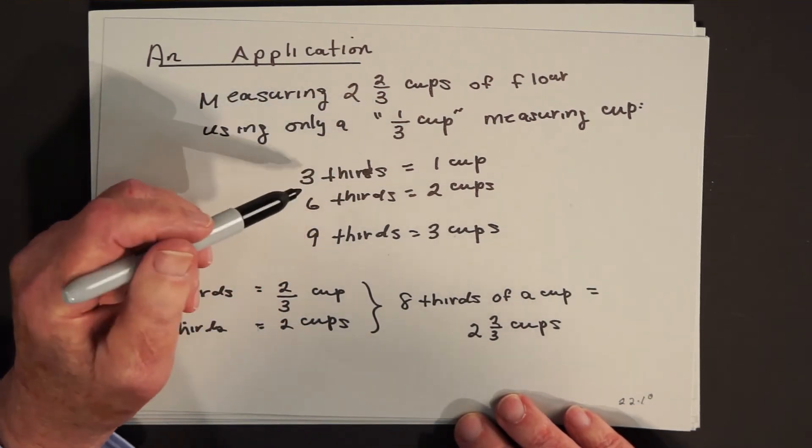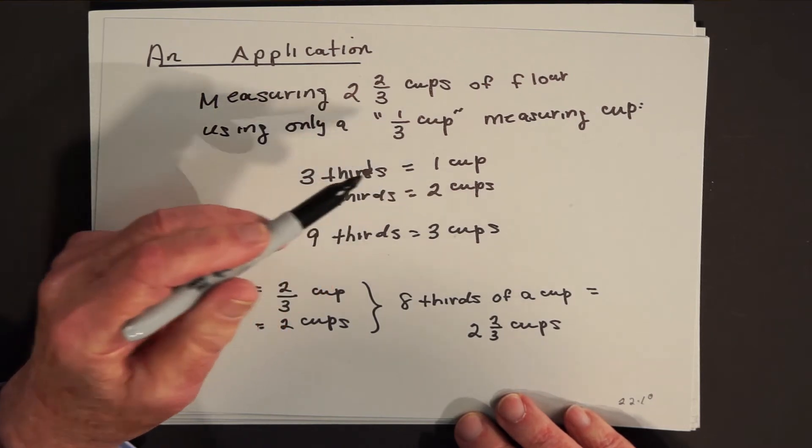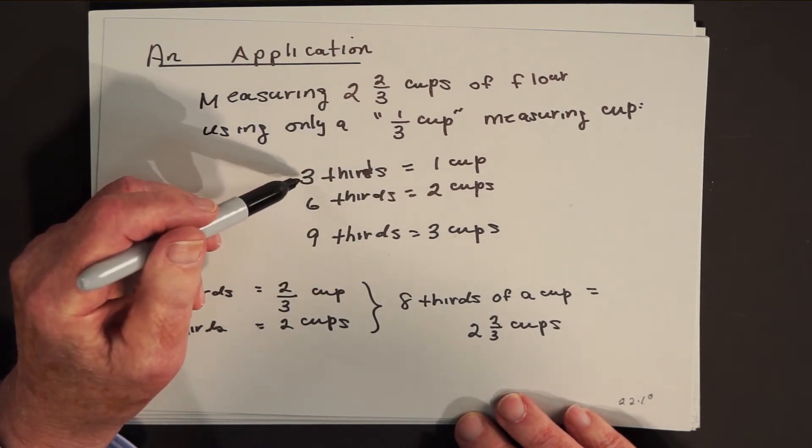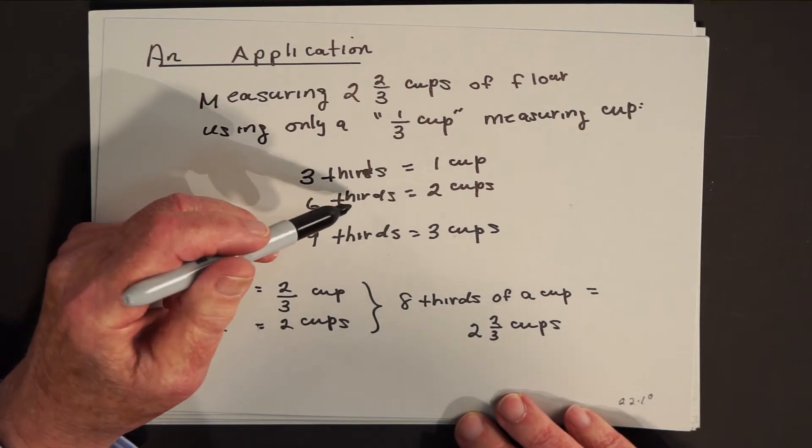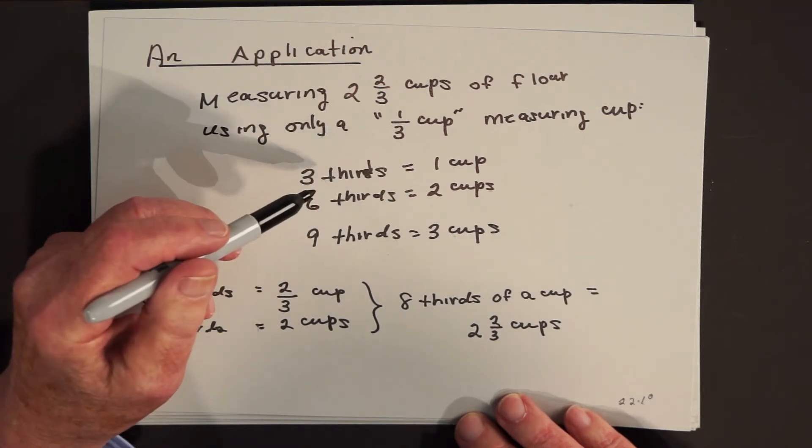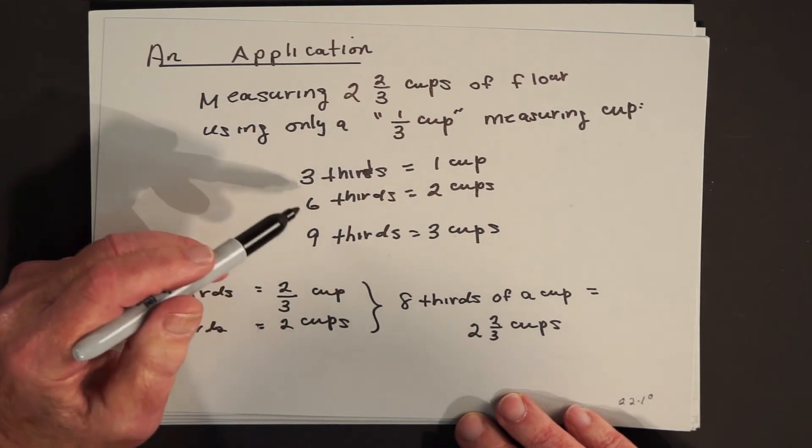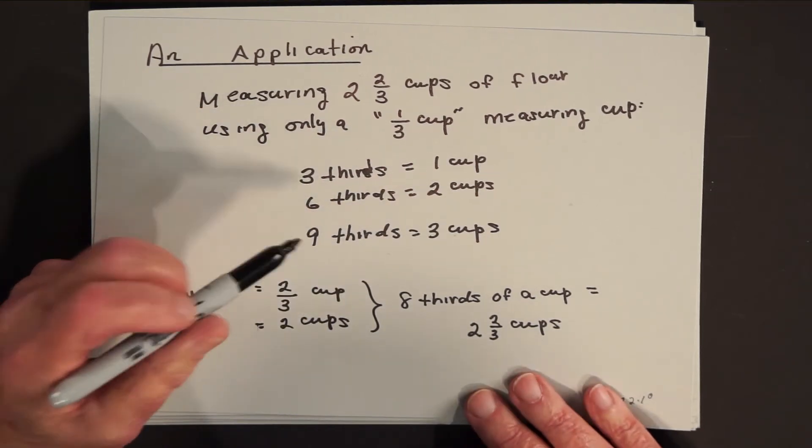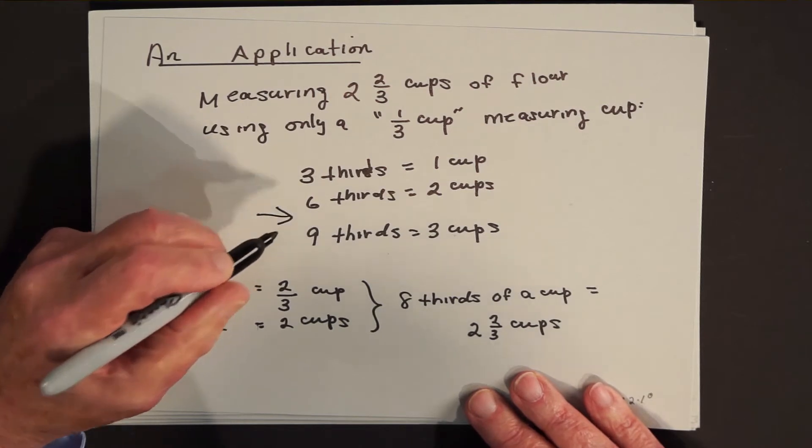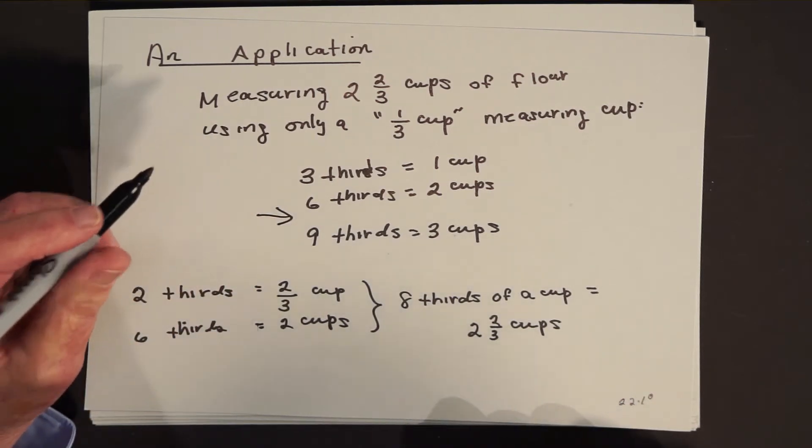Since I'm dealing with thirds, it takes three thirds to make one cup. Two thirds, two of three thirds twice to make six thirds. See, three thirds is one cup. Six thirds is two cups. Nine thirds would be three cups.